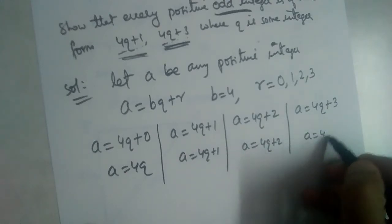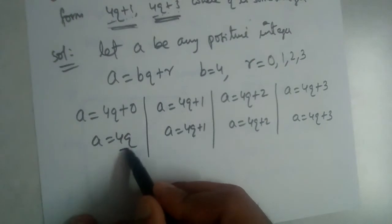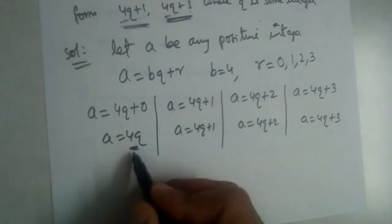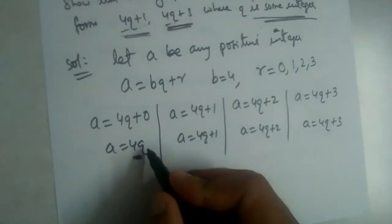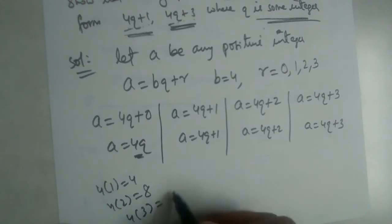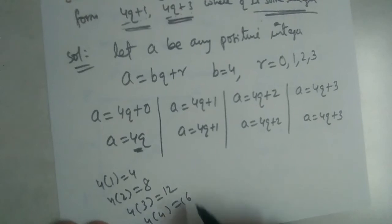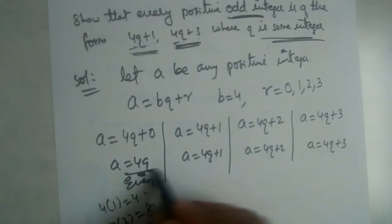This is a multiple of 4. We know all multiples of 4 are even. q is some integer, so if we substitute q equal to 1 we'll have 4, if q is 2 we'll have 8, if q is 3 it will be 12, if q is 4 it will be 16. All these are even numbers, so the first one will be even.